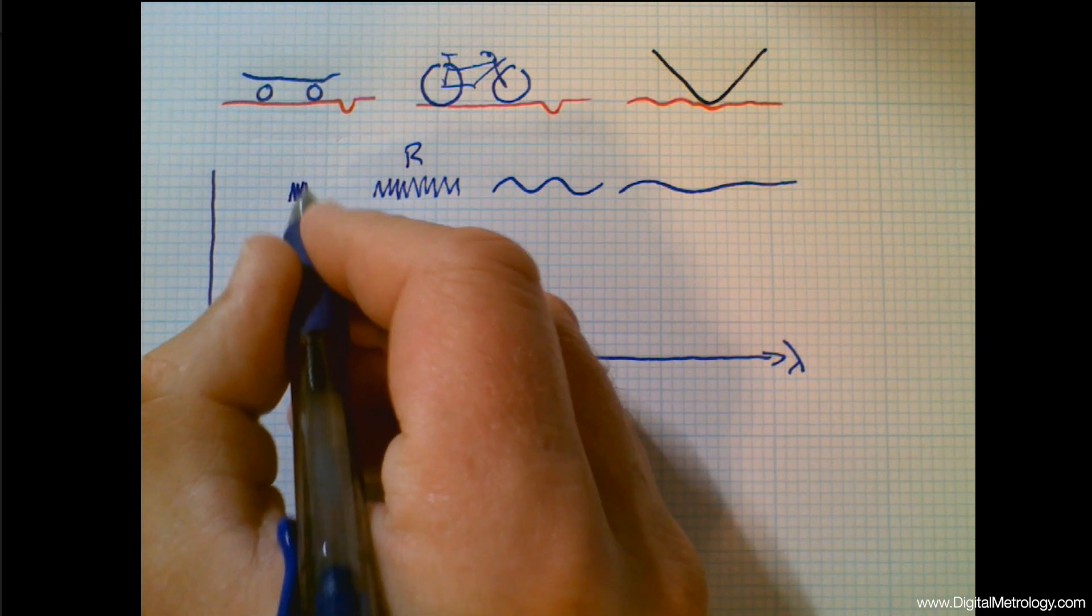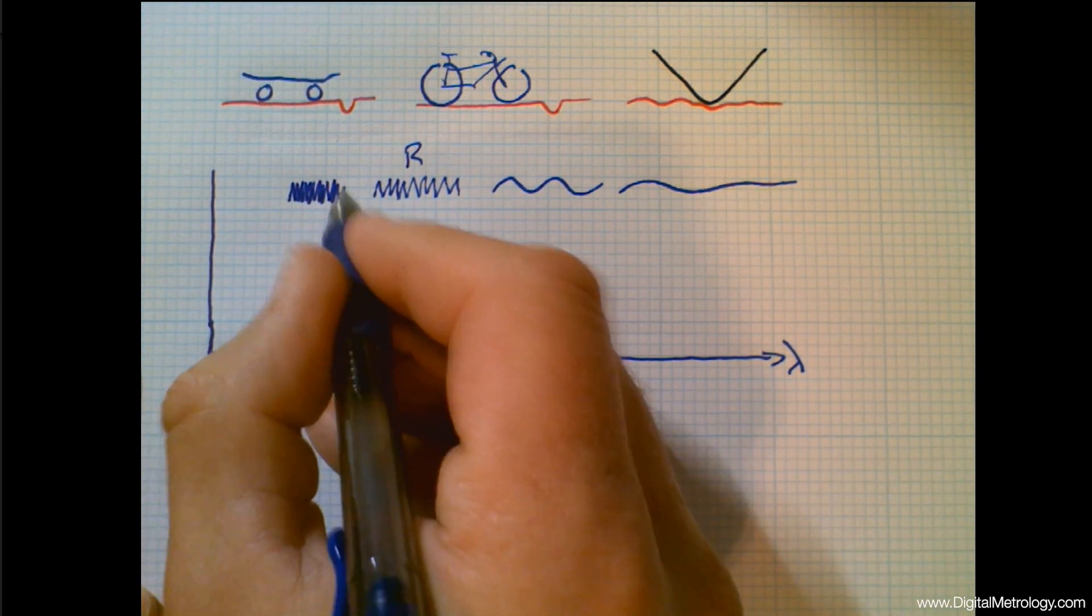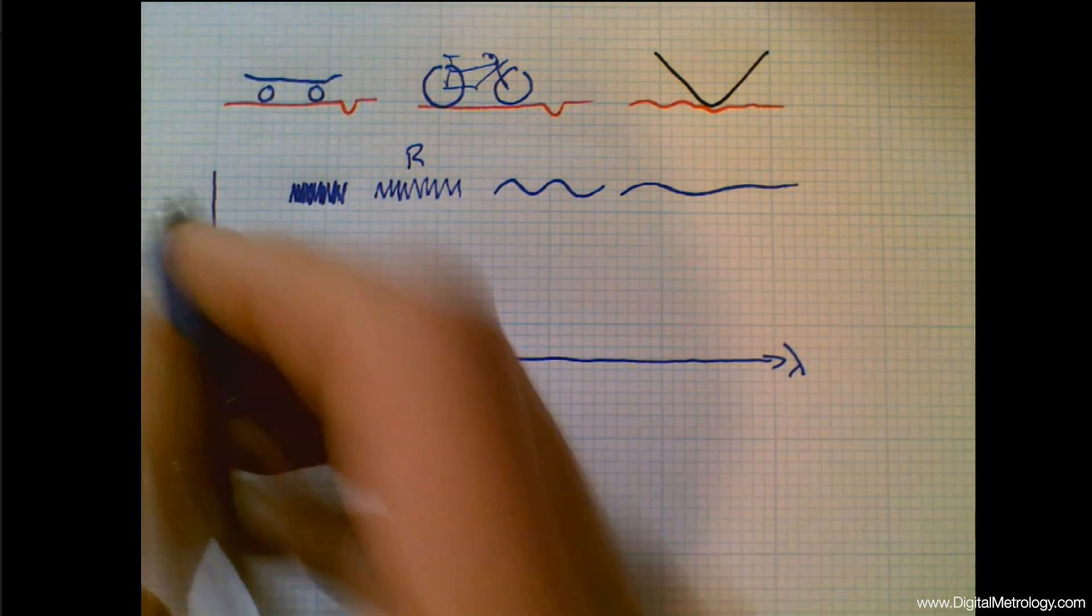Now at a finer scale than roughness, shorter wavelengths, things that are closer together, maybe we're talking about cracks or grain boundaries. That's where the stylus can have a little more trouble.